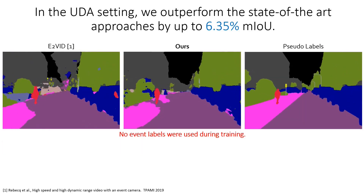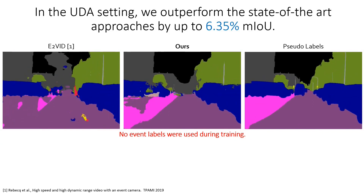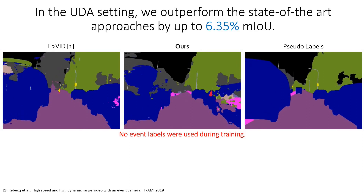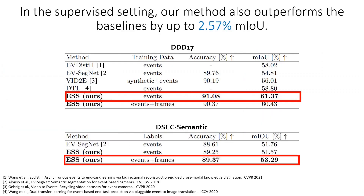The improved accuracy can also be observed qualitatively in the predicted semantic masks by the more accurate and more consistent predictions. An additional advantage of our method is the ability to leverage image labels and event labels during training. In this supervised setting, our method outperforms the baselines by up to 2.57% mean IOU.